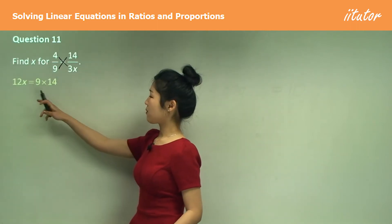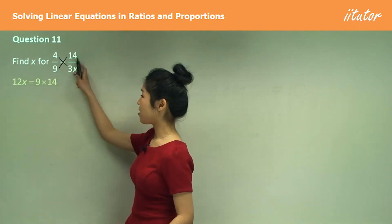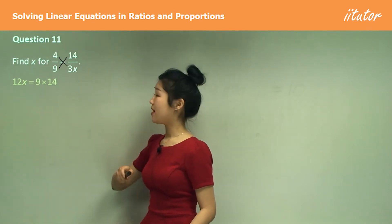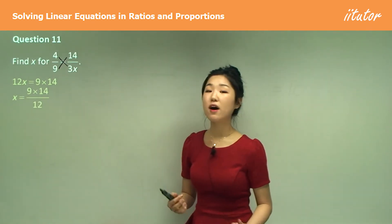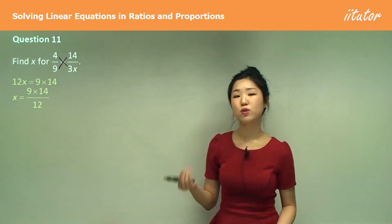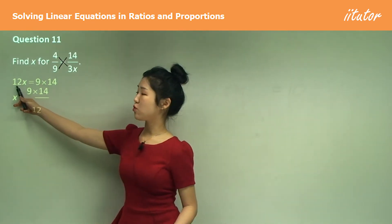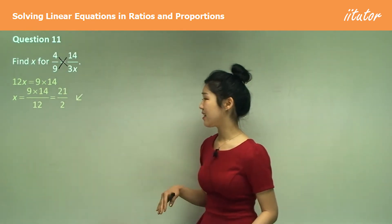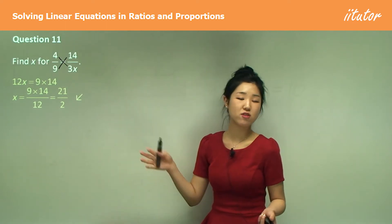4 times 3x is 12x. Now 9 times 14 divided by 12 will give you x, because we want to get rid of the 12. Calculate it — the answer should be 21 over 2. Leave it as a fraction.